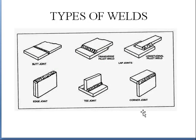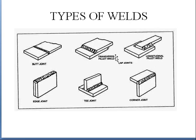We have different types of weld joints. Butt welding is when both plates are joined side by side. Lap joints are when two plates overlap each other and welding is performed — this is called lap welding. When both components are welded in the overlapping area, we have transverse fillet welding and longitudinal fillet weld. Since both components are overlapping each other, it is called lap welding.